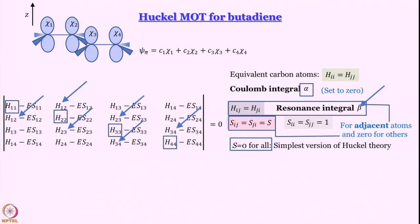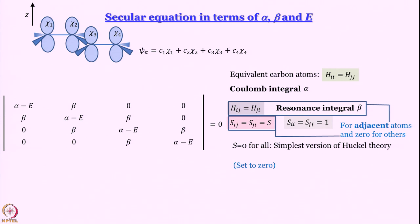This is where we started from. We said that we are going to set H11, H22, H33, H44, those are actually alpha we are going to set it to 0 later on. Then we said S11, S22, S33, S44 these are all equal to 1. So the diagonal terms become something like alpha minus E everywhere. Then H12 is beta and this minus E times S12 that becomes 0 because S12 is equal to 0. So we get alpha minus E, beta, 0, 0; beta, alpha minus E, beta, 0; 0, beta, alpha minus E, beta; 0, 0, beta, alpha minus E. So this determinant is equal to 0.